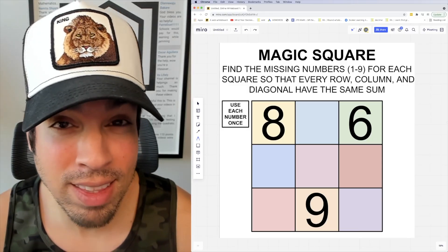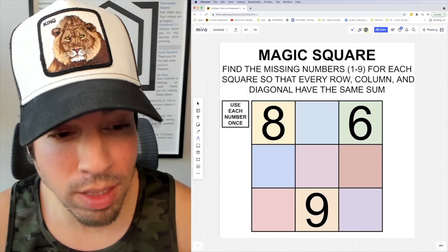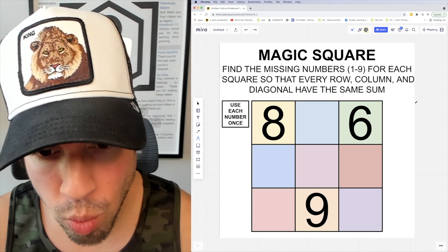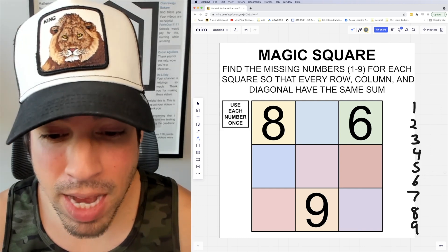The key with a puzzle like this is to understand what the sum must be for every row, column, and diagonal. Well, if we have numbers one through nine, the way to find that magic sum...